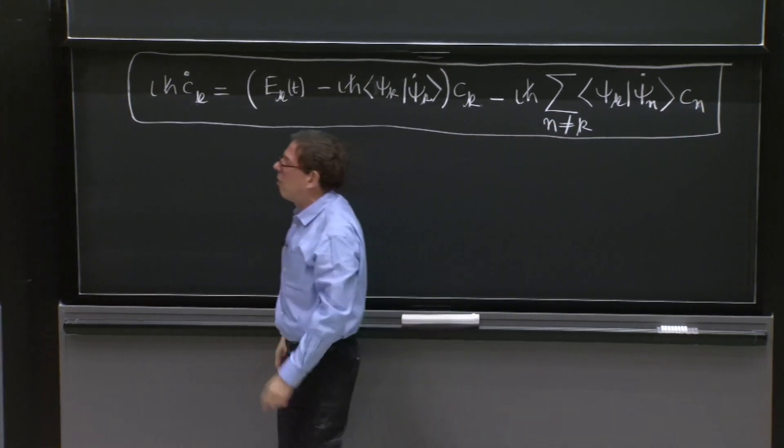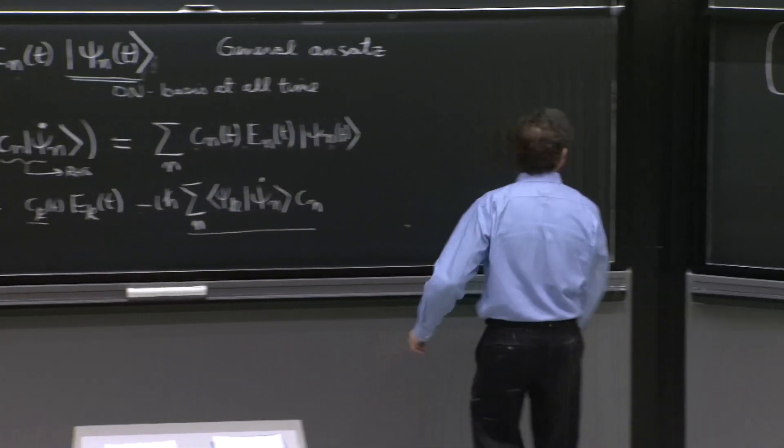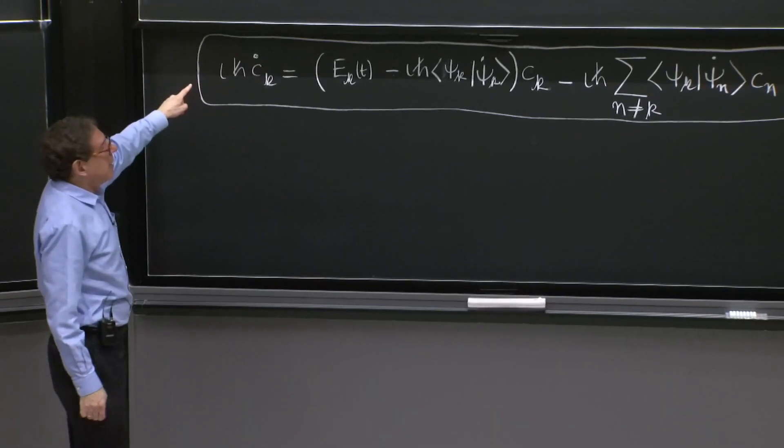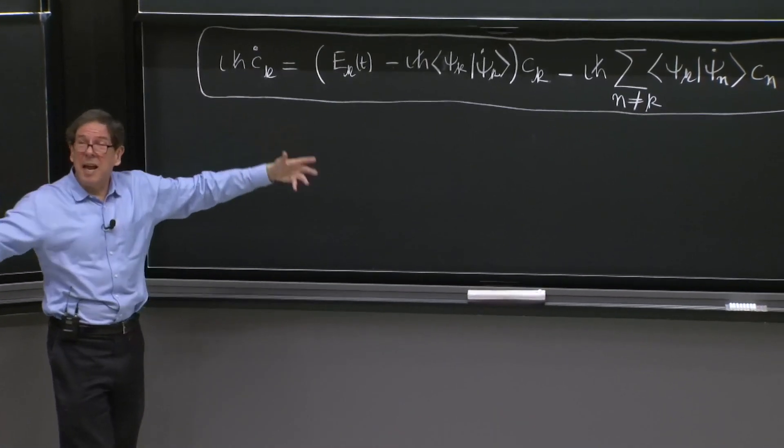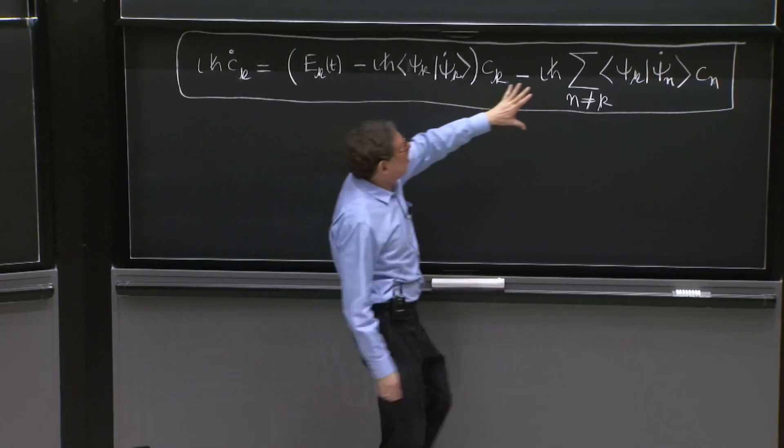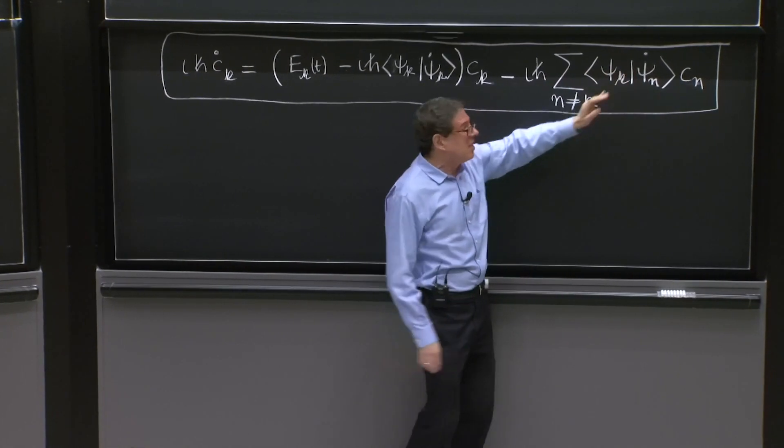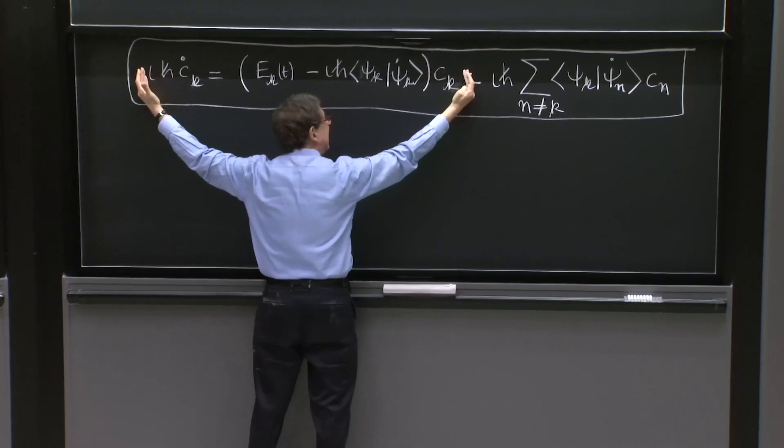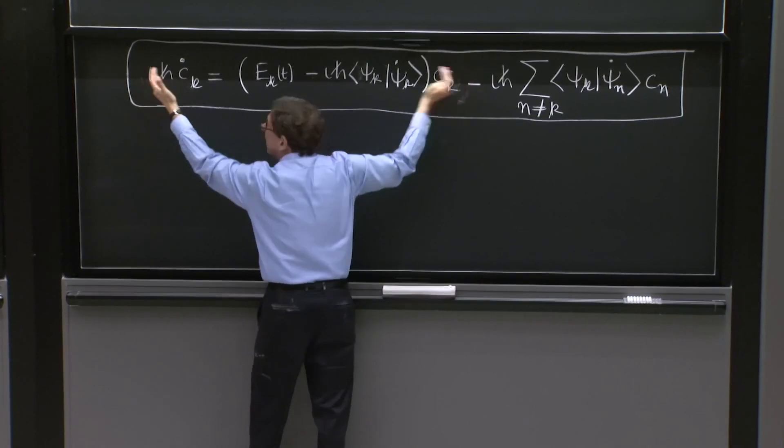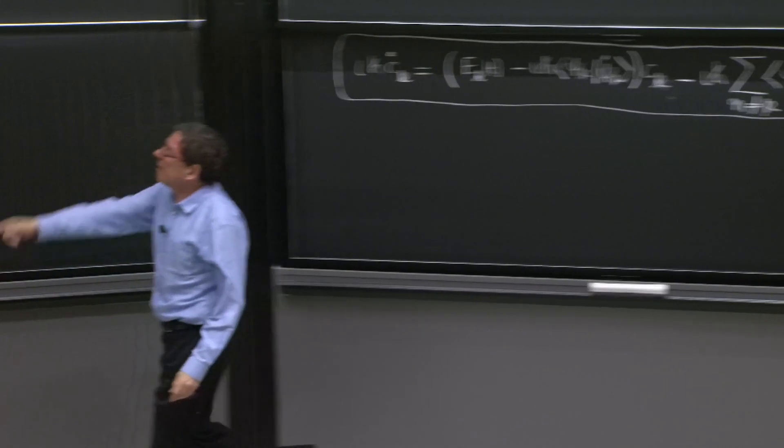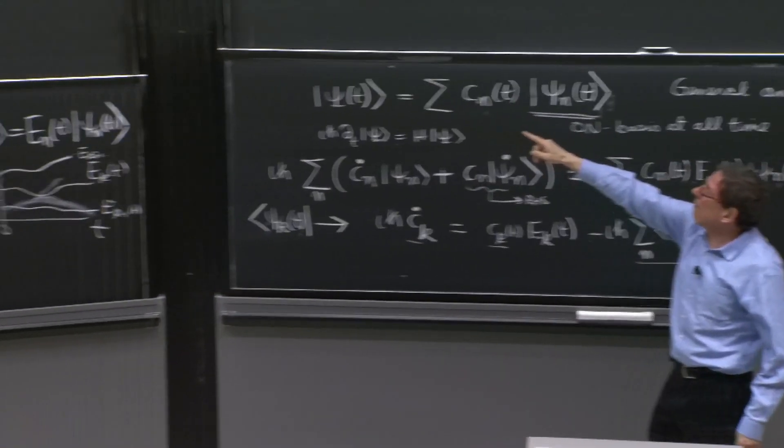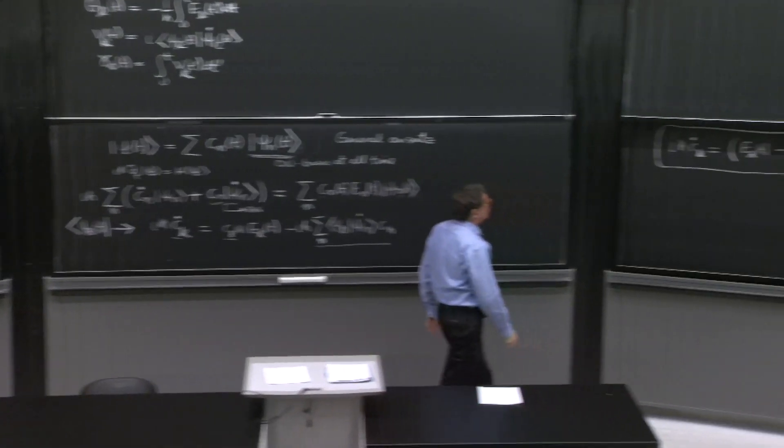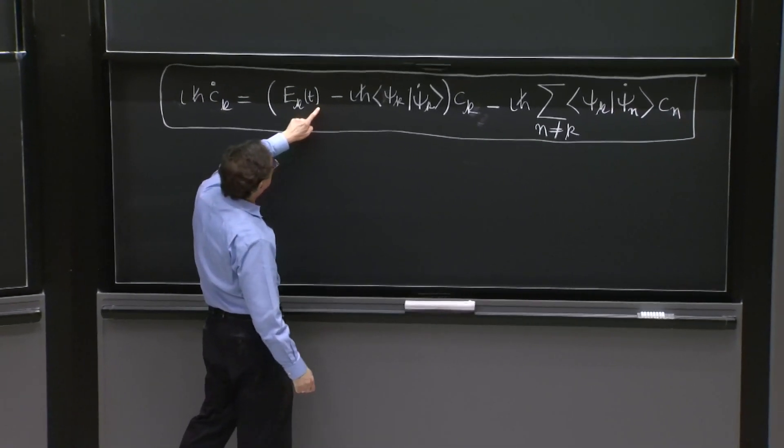So what we did before was essentially by claiming that this term is small, just focus on this thing. And this is an easily solvable equation that gives the type of solution we have there. When you have c dot equal to this,